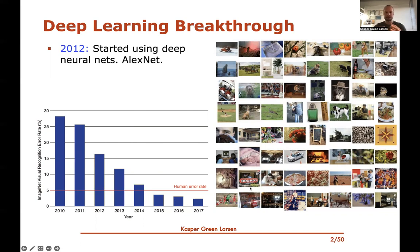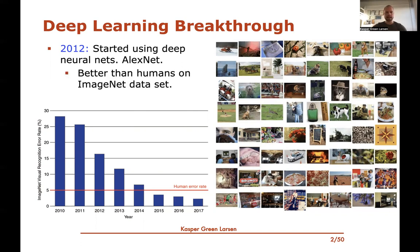We'll try to dive into some of the ideas and techniques that are part of AlexNet. By now, these deep neural nets are better than humans on the ImageNet dataset, but still not in the wild — if you take pictures with your phone, humans are still better at saying what's in the image.